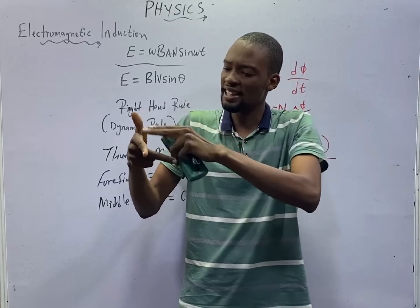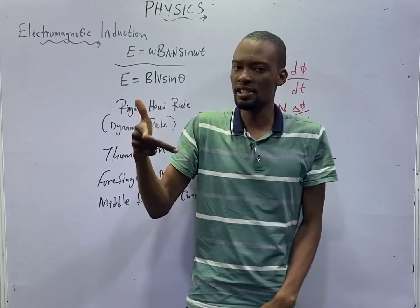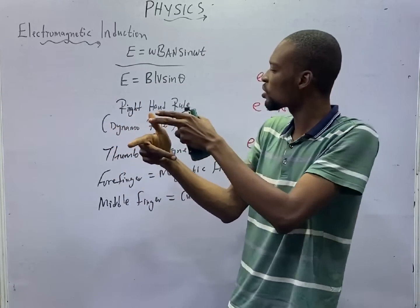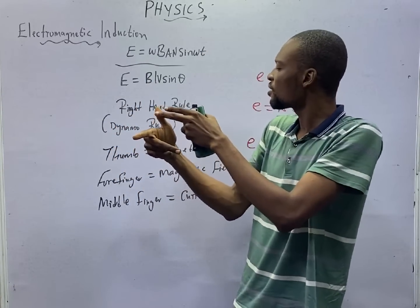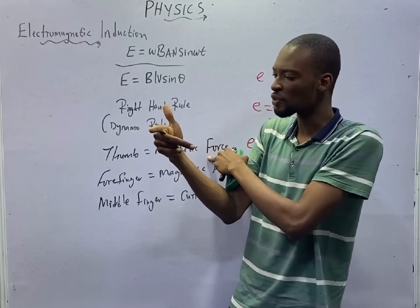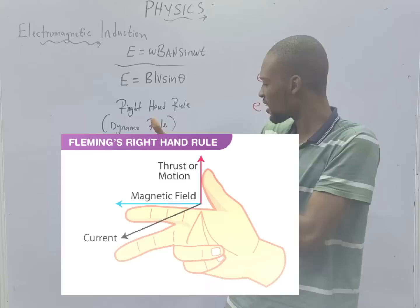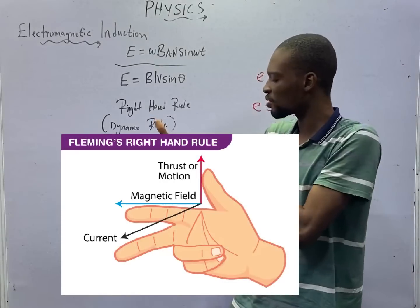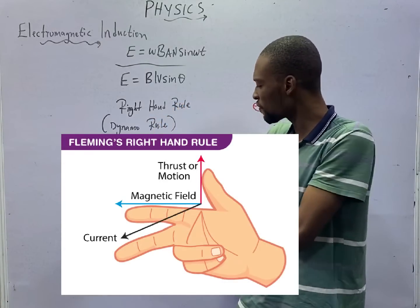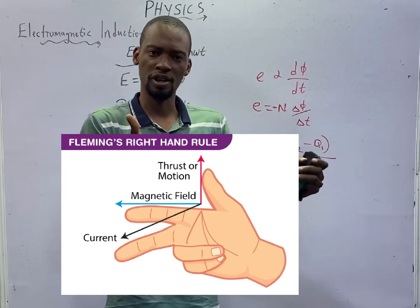You will see that they are at 90 degrees to each other. Your thumb indicates the direction of the magnetic force, your forefinger indicates the direction of the magnetic field, and your middle finger indicates the direction of the current.